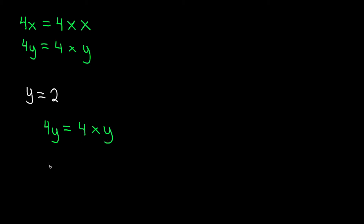So we could plug it in like this: 4 multiplied by 2, which comes out to 8. They're the same thing. Generally though, you will see it with parentheses — you'll find it easier to put the variable value into parentheses.